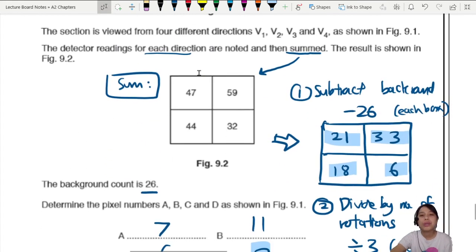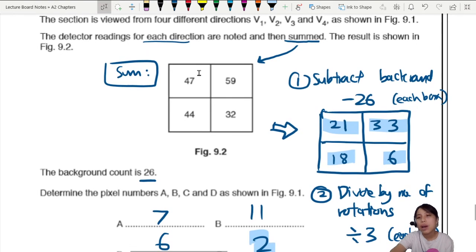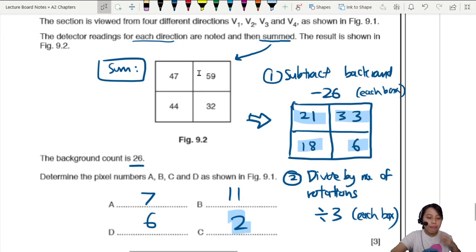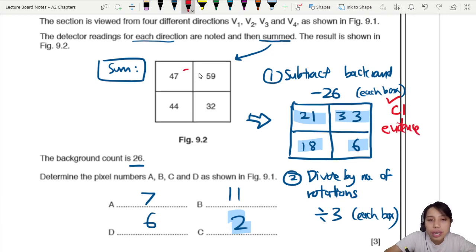So the three marks, the first one comes if they see that you have evidence of doing a subtraction of 26. So they want to look for some evidence. Maybe you write some working here, minus 26 or even better, list out the working fully like this one here. That one is the best way.